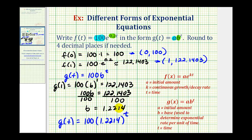This function tells us that if we take the base and subtract one, the growth rate would be approximately 22.14% per unit of time. So if t was in years, this would be a 22.14% growth rate per year, which is the same as a continuous growth rate of 20%.